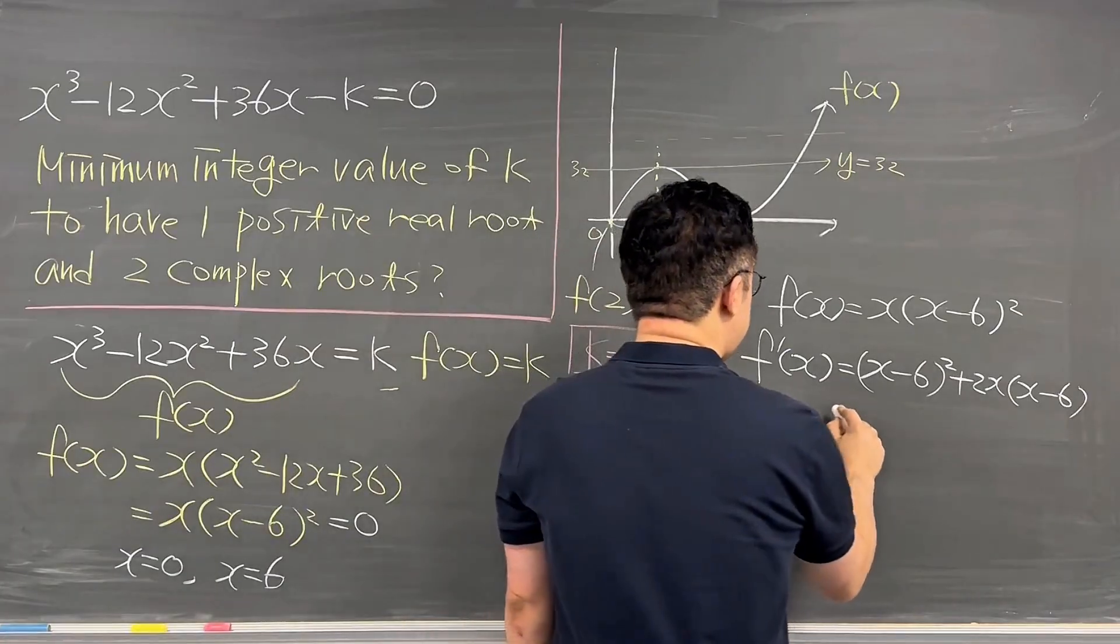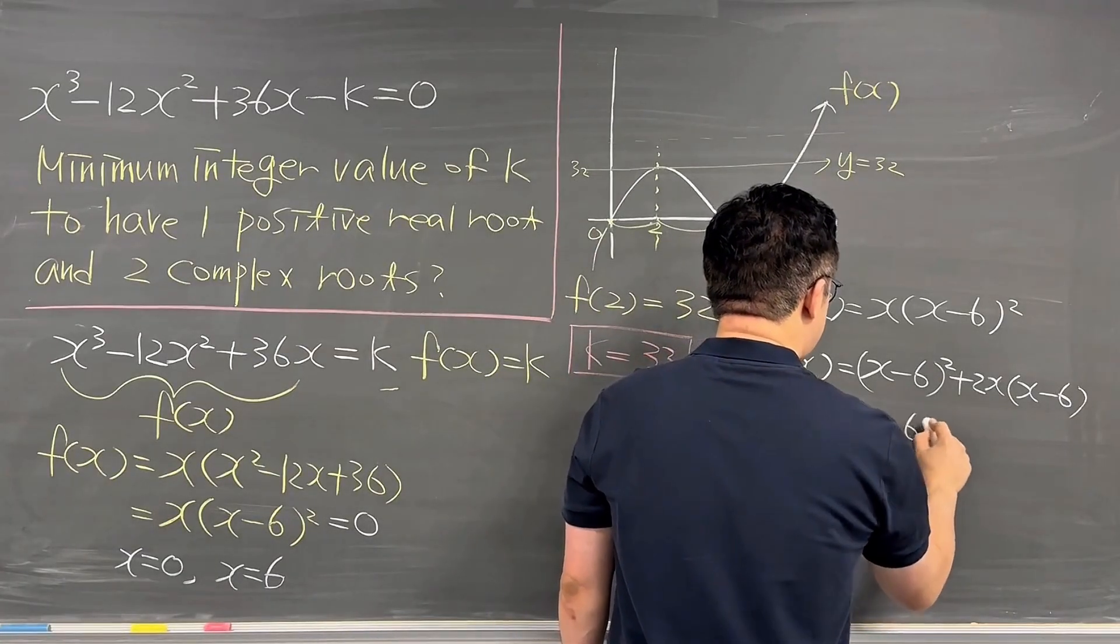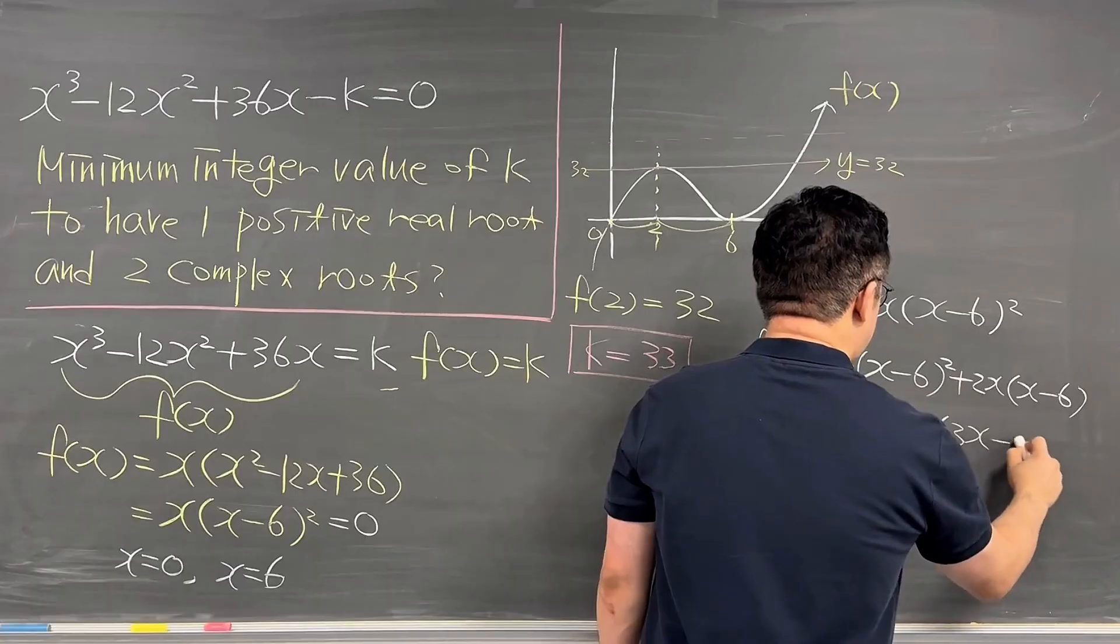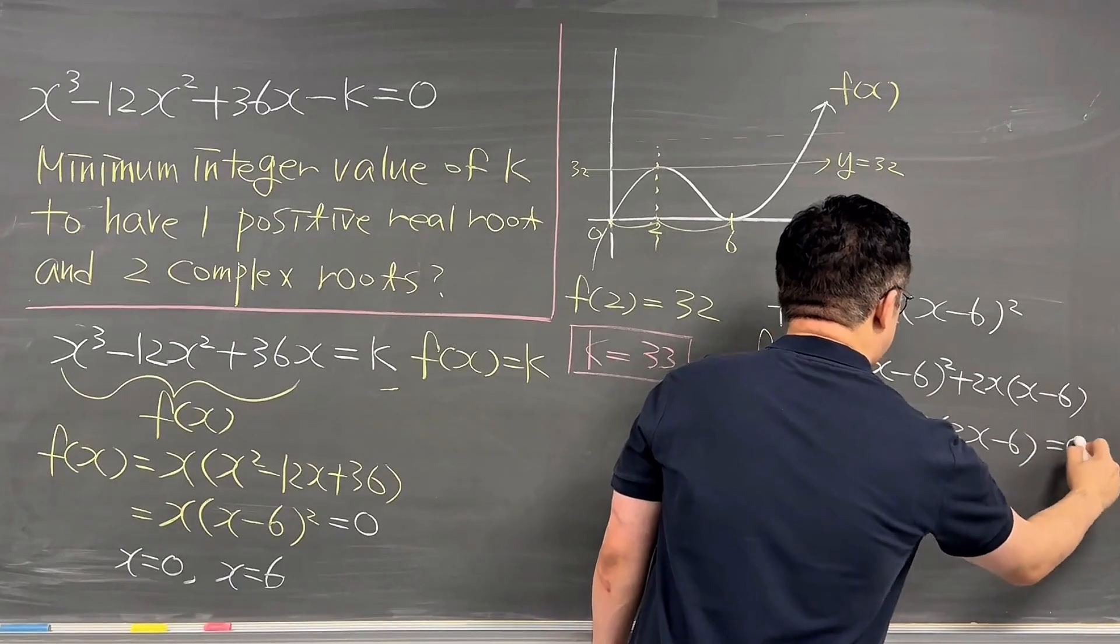So it is (x-6)²+2x(x-6). Okay, then it looks like it is the same as (x-6)(3x-6). Set this equal to 0.